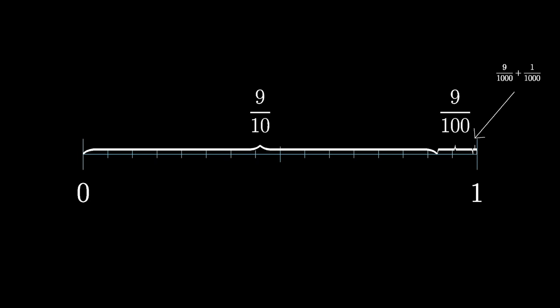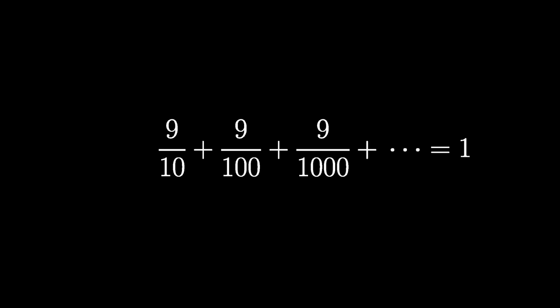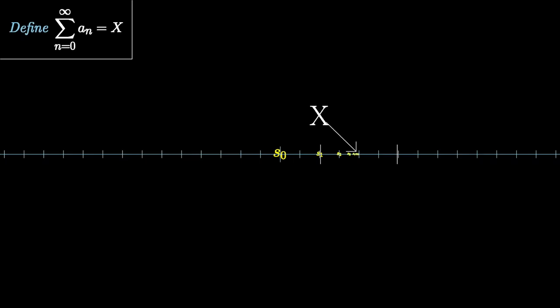Continuing on and on, you'd see that nine-tenths plus nine one-hundredths plus nine one-thousandths on and on up to infinity equals one, a fact more popularly written as 0.9 repeating equals one. To all of your friends who insist that this doesn't equal one and it just approaches it, you can now just smile because you know that with infinite sums, to approach and to equal mean the same thing.